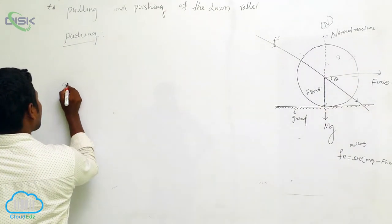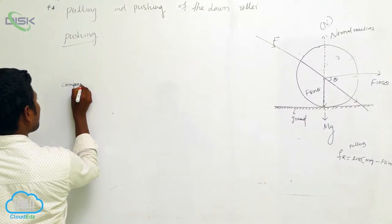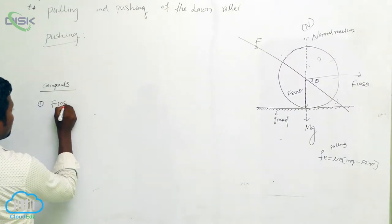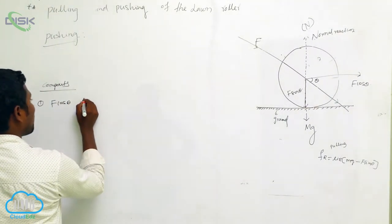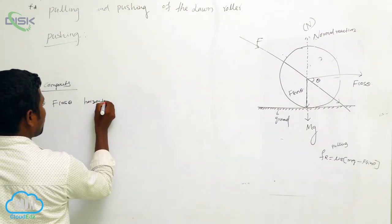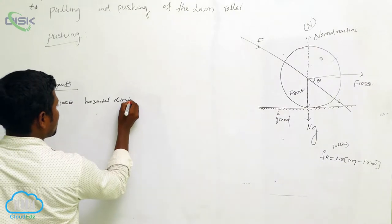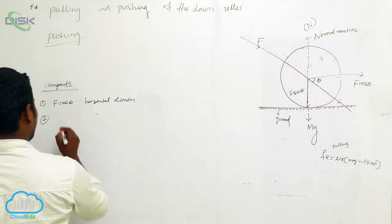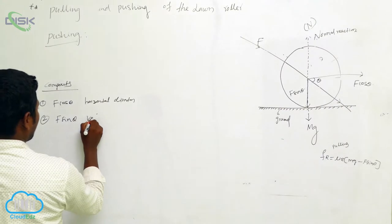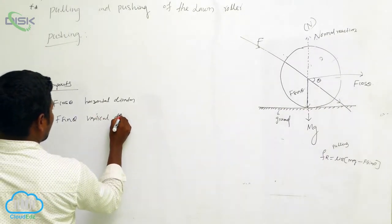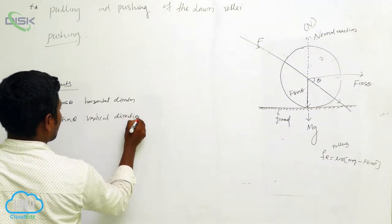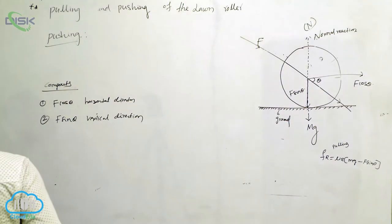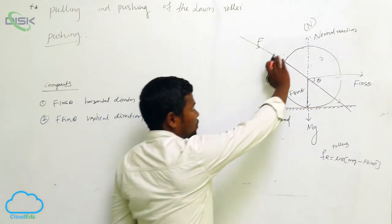The first component is f cos θ in the horizontal direction. The next one is f sin θ in the vertical direction. So always f cos θ is in the horizontal direction and f sin θ is in the vertical direction.